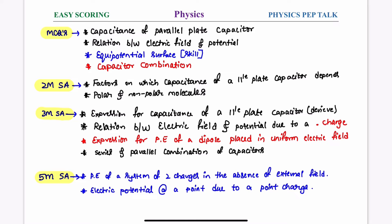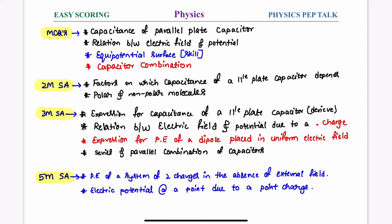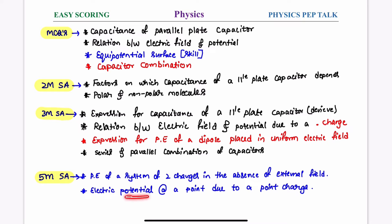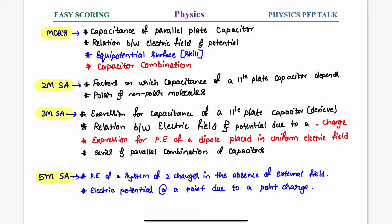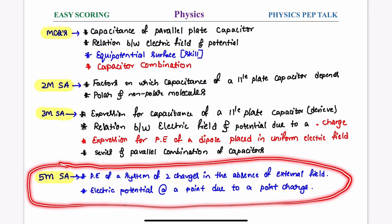For 5-mark answers: potential energy of a system of two charges in the absence of an external electric field is 5 marks. Electric potential at a point due to a point charge is also a 5-mark derivation. Note that the 3-mark derivation is not guaranteed to be a 5-mark question.